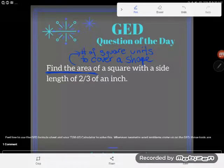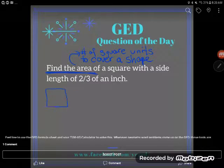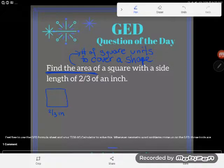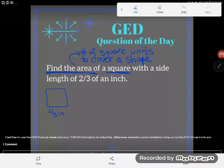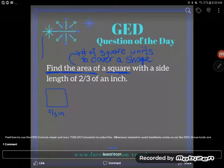Now this one's interesting because our shape is really small. We can see that it's just two-thirds of an inch. It's a square, right? Find the area of a square with a side length of two-thirds of an inch. And so if you think about it, like a square unit would be, think about a square inch.